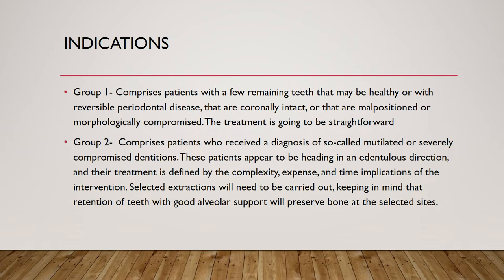Coming to the indications, divided into two groups. Group one comprises patients with a few remaining teeth that may be healthy or with reversible periodontal disease, and which are coronally intact, malpositioned, or morphologically compromised — treatment is mostly straightforward. Group two has a diagnosis of mutilated or severely compromised dentition; these patients appear to be heading in an edentulous direction and their treatment is defined by complexity, expense, and time.